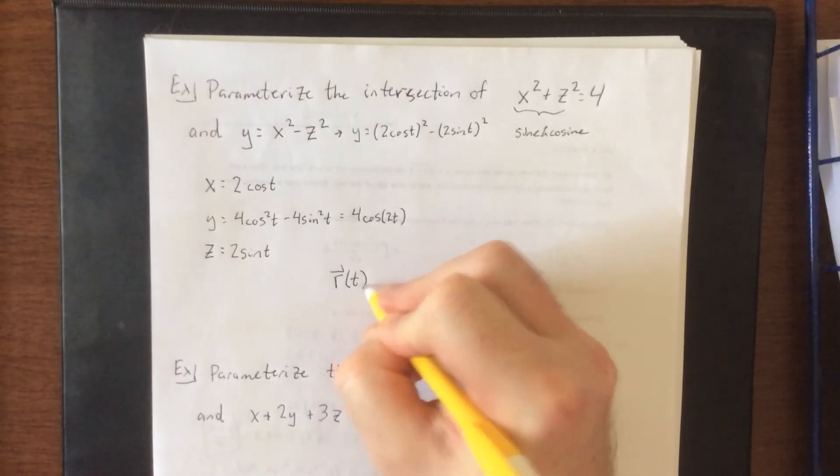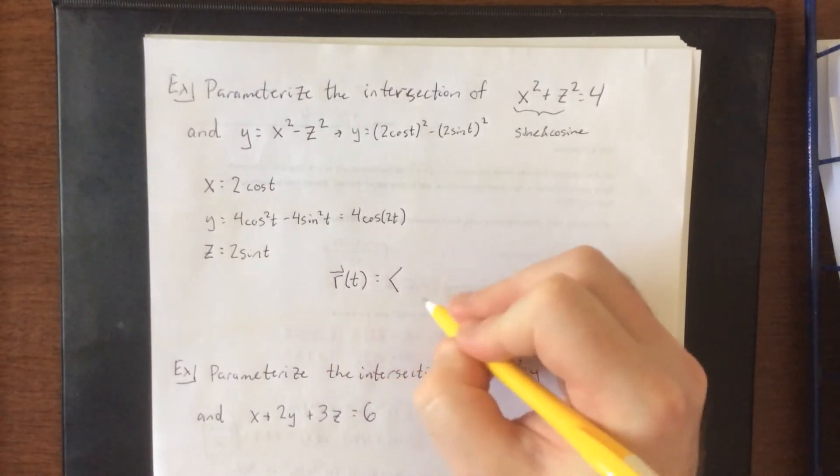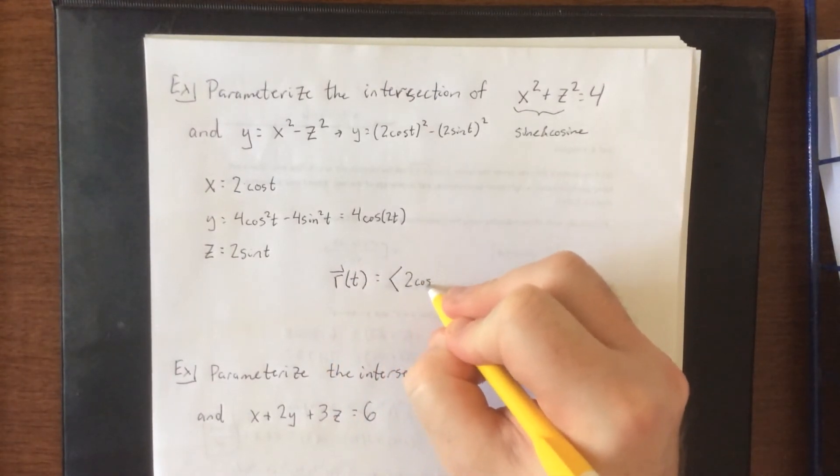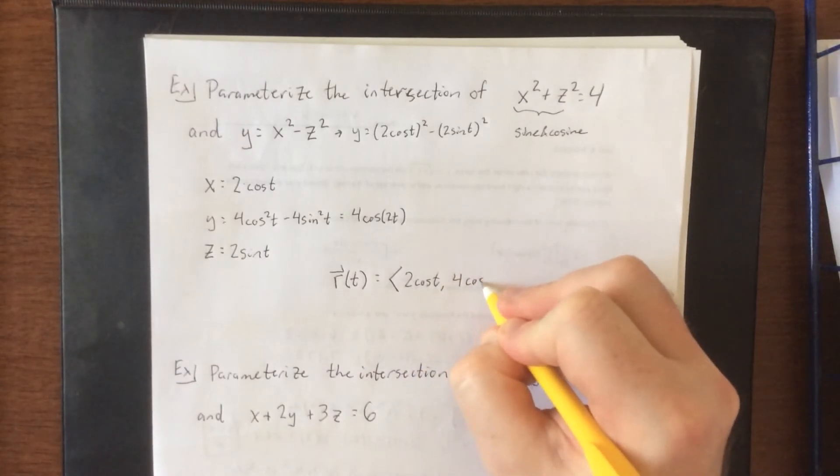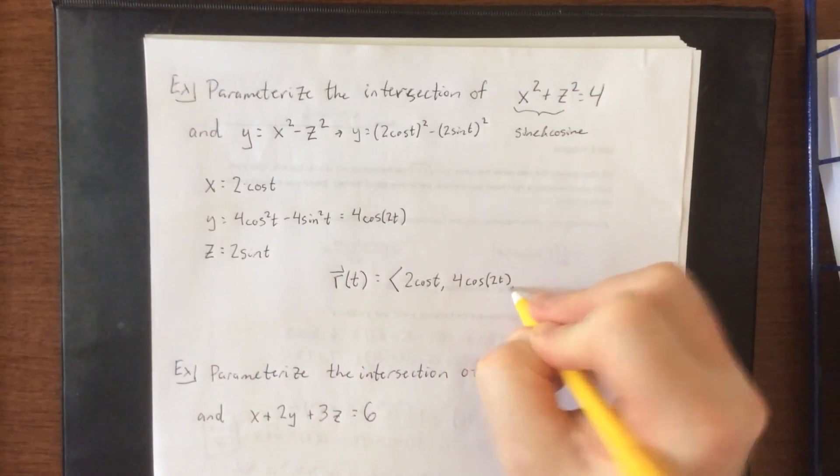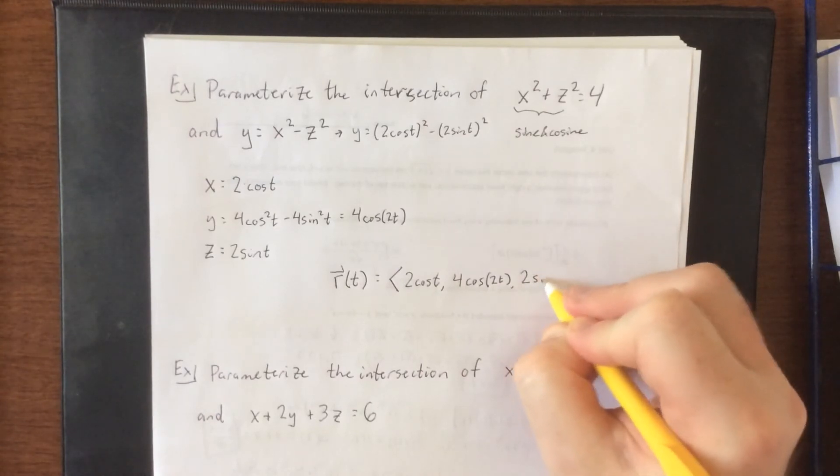So now, parameterization. As a vector function, x is going to be equal to two times the cosine of t, y is four times the cosine of 2t, and z is equal to two times the sine of t.